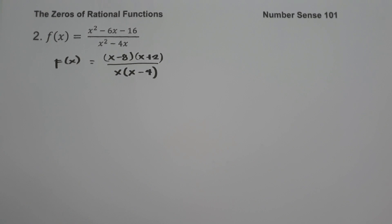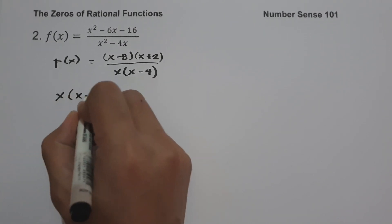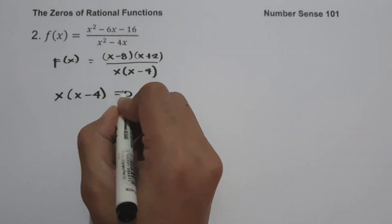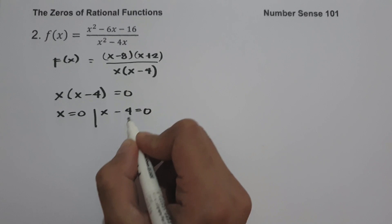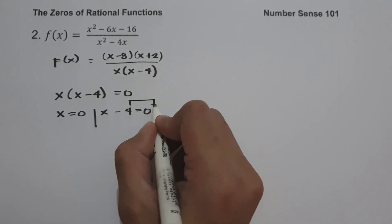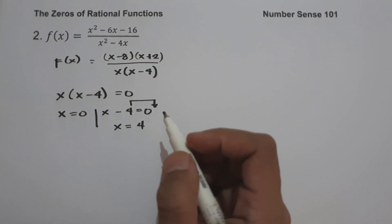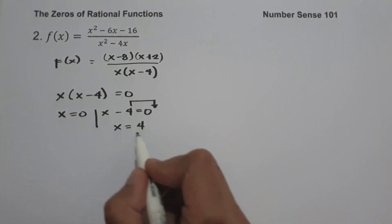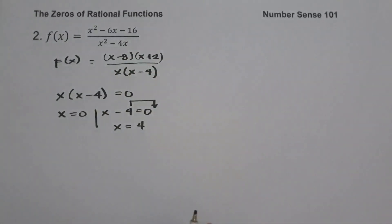The next step is to identify the restrictions — the values of x that make the function undefined. Setting the denominator x times quantity x minus 4 equal to 0 gives x equals 0 and x equals 4. Therefore, the restricted values are 0 and 4, because substituting either into the function gives undefined.